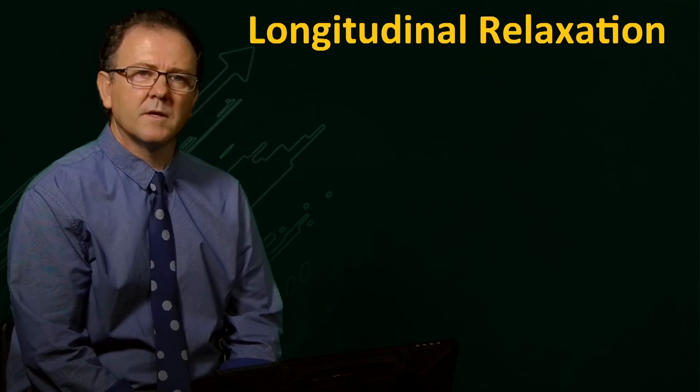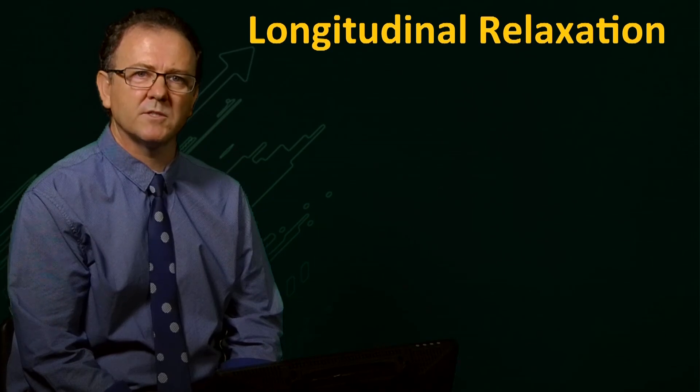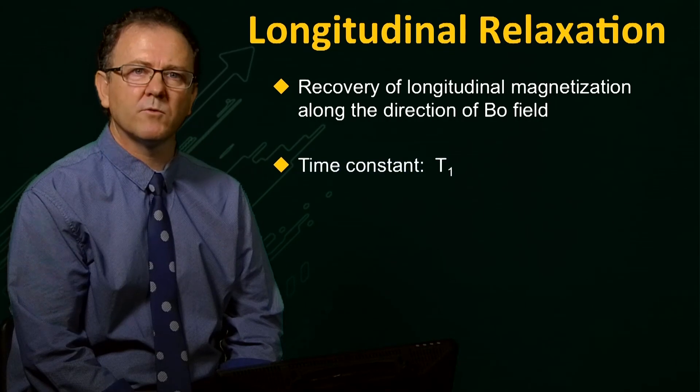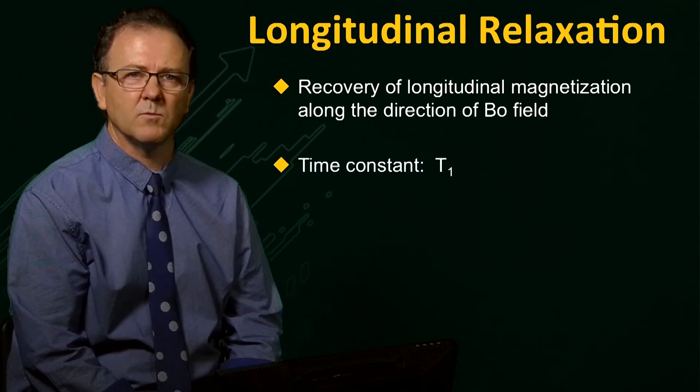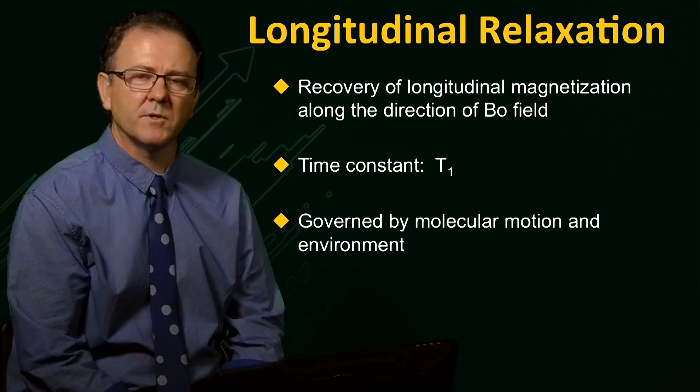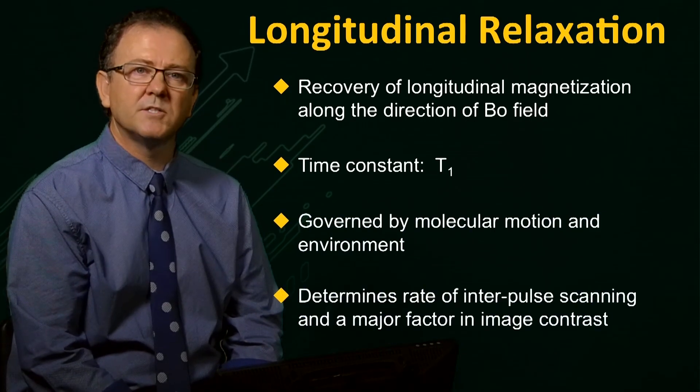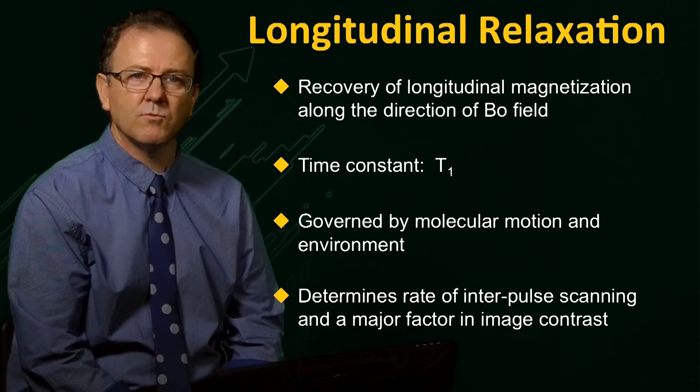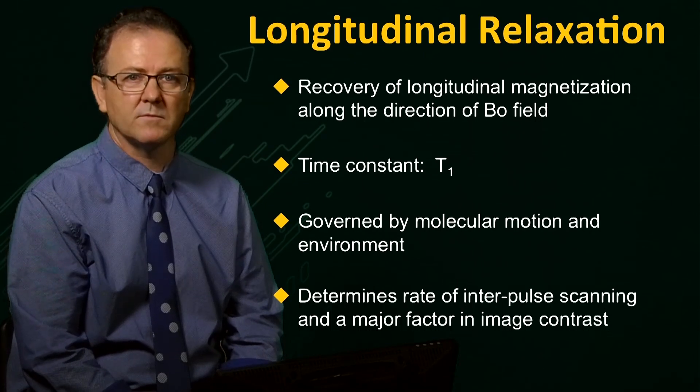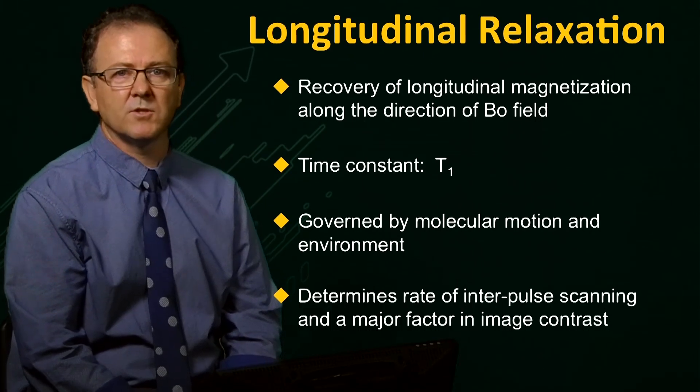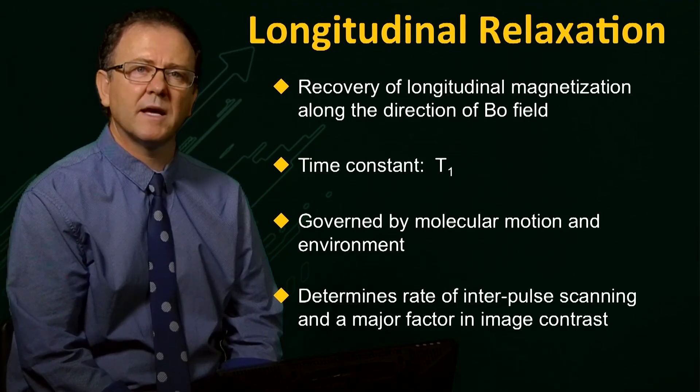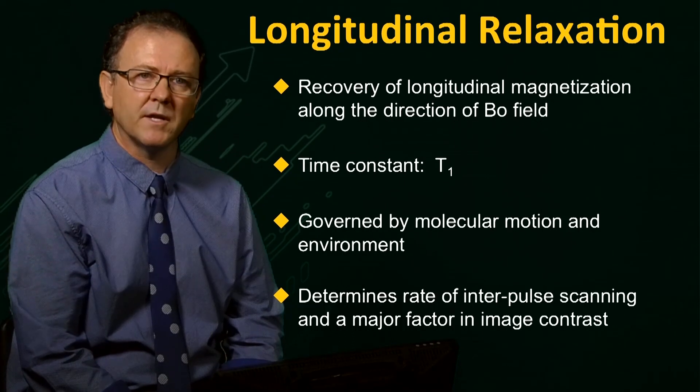In summary then, longitudinal relaxation causes recovery of the magnetization along the z-axis. The rate of recovery is characterized by the relaxation time constant T1. The relaxation is governed by molecular motion and the environment of the spins. It is the longitudinal relaxation time that determines the rate at which we can apply consecutive excitation pulses and retain maximum signal. Since different tissue types have different physical properties, they give rise to different T1 times, and so this plays an important role in providing image contrast.